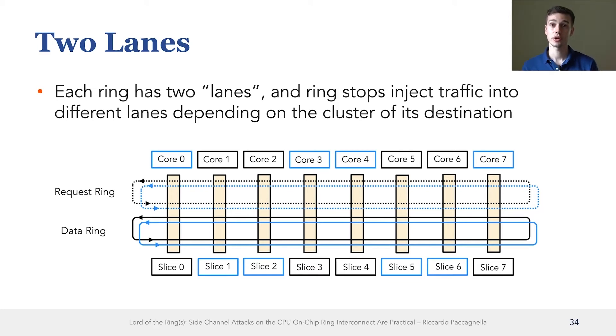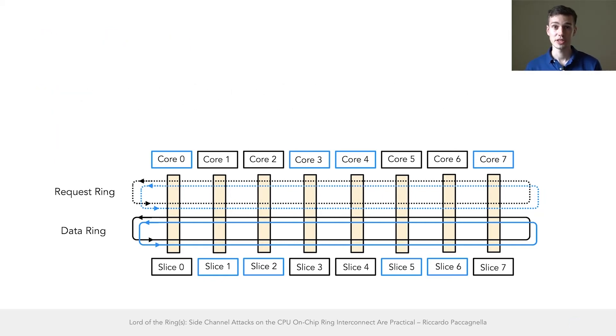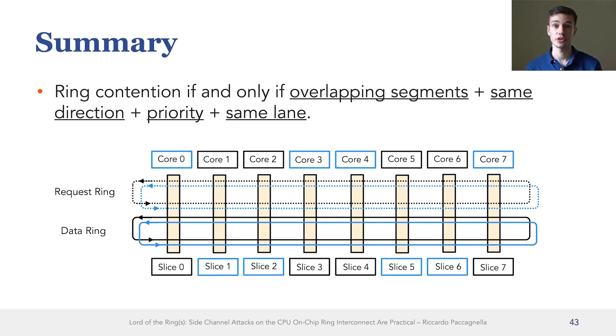In the slides attached to this talk, you can find some examples for cases when there is contention due to sharing the lane versus not sharing the lane. So in the first part of this talk, we saw that for contention to occur on the ring interconnect, the sender and the receiver need to issue traffic that travels in the same direction, on overlapping segments, on the same lane, and that the sender has priority over the receiver.